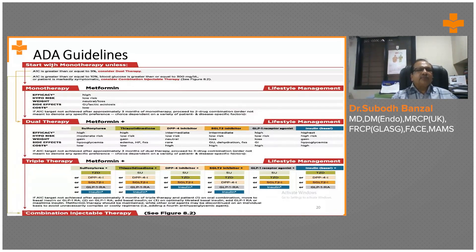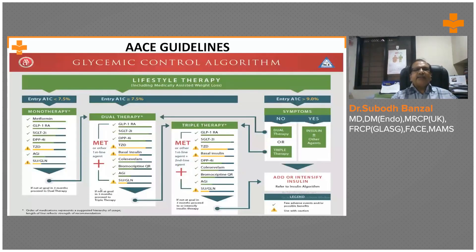Depending on the patient — what they want — you have to take care of efficacy, hypoglycemia risk, weight gain, side effects, and cost, as every drug has different properties. The guidelines also mention lifestyle management and medically assisted weight loss. Weight is a very important part of the management of diabetes — if the patient is overweight and not taking care of that, no matter what medication you write, they may not be controlled.